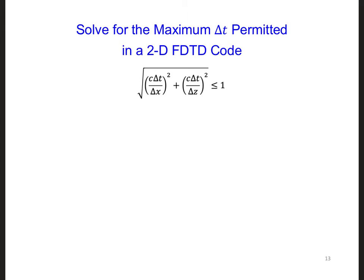To solve for dt, we can first square both sides of the equation, which would get rid of the square root, and of course we get just 1 on the right side.